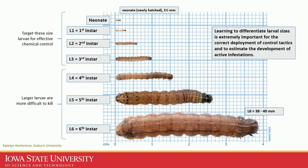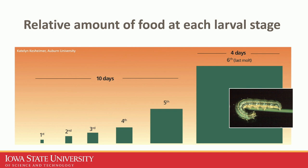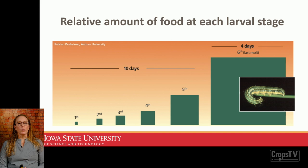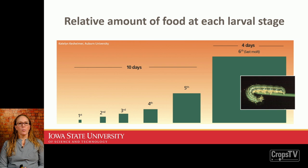It's important to distinguish the different instars. Most people can recognize the sixth instar in the field, but the earlier instars are harder to distinguish from other armyworms and cutworms. Scouting should be focused on smaller ones — they're easier to kill and eat much less than the bigger instars. Those first five instars combined consume less food than the final sixth instar alone, so making treatment decisions when larvae are small is a more effective way to protect the crop.